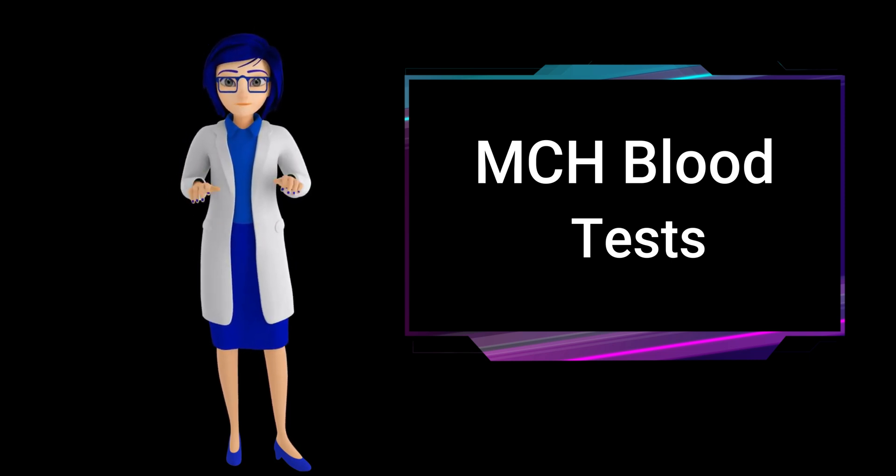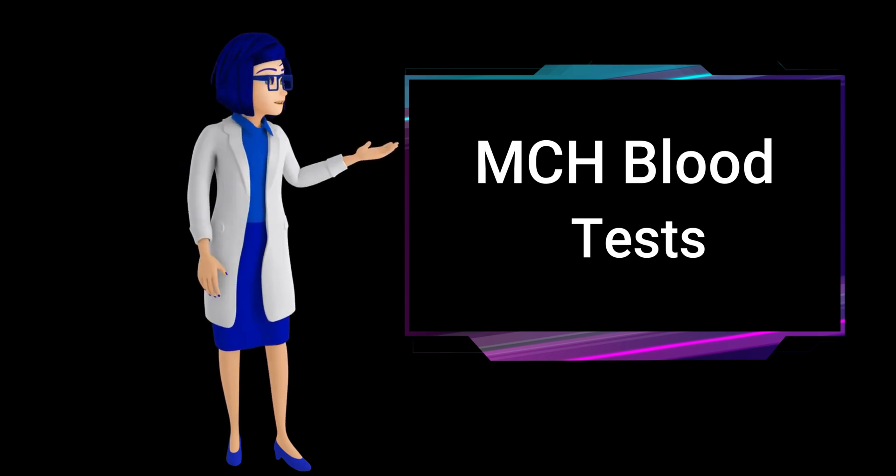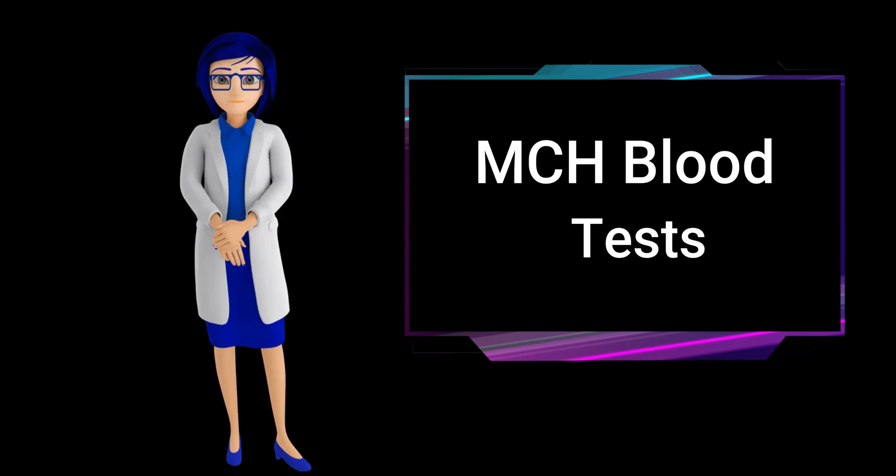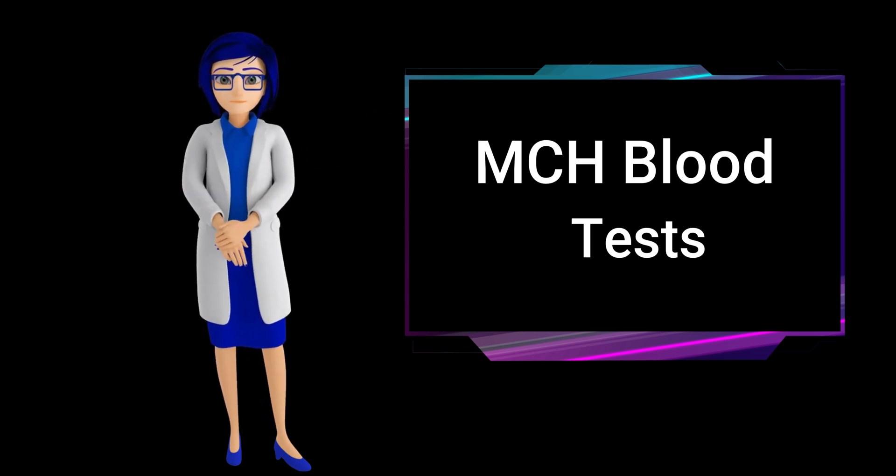Vitamin B12 deficiency: A deficiency in vitamin B12 can lead to megaloblastic anemia, a type of anemia characterized by large, immature red blood cells with a low hemoglobin content.